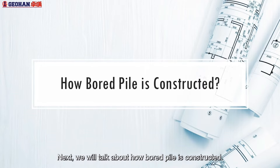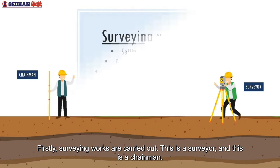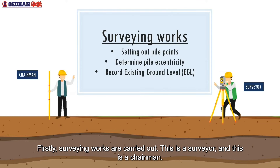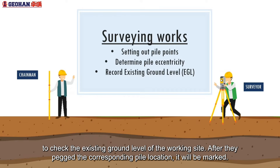Next, we will talk about how bored pile is constructed. Firstly, surveying works are carried out. This is a surveyor and this is a chainman. They are responsible for setting out pile points, determining the offset of constructed piles, and checking the existing ground level of the working site. After they mark the corresponding pile location, it will be marked.